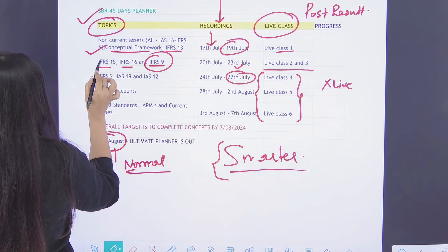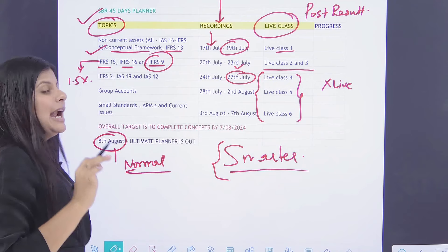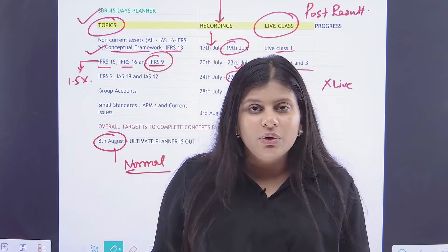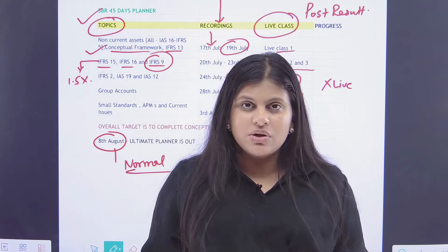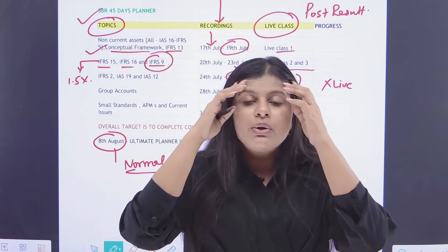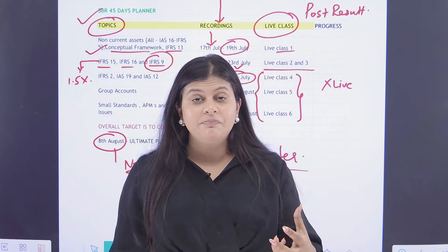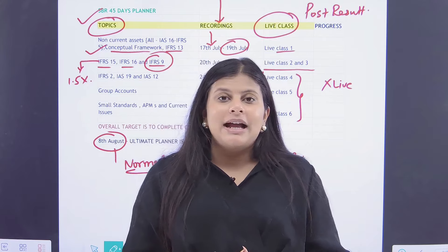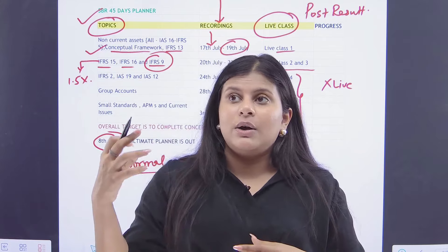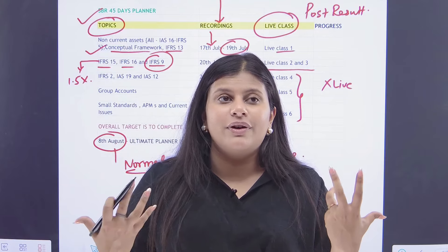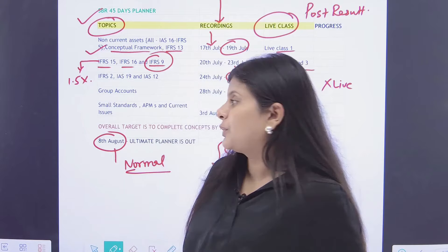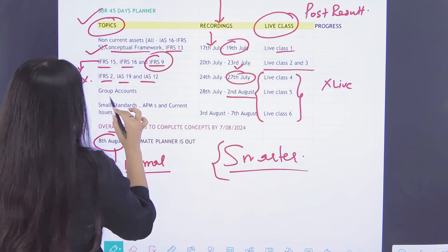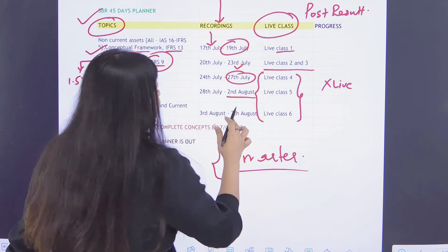And while watching the recordings, make sure you make your own notes or try to make a table. I'm not saying handwritten notes or something like that. I've already attached the notes on the portal with each lecture, but try to make some kind of table to memorize. I don't know if you've seen that video of Sumedha. She was a top scorer from our batch of June. She got 87 in SBR and I just interviewed her yesterday. And she told that how she used to make notes along with the lectures, which included small tables and some kind of crisp points which she can revise just a day before the exam. So of course, you have to use that. Then IFRS 2, IAS 19, IAS 12, you have to cover by 27th July. 2nd August, you have to cover the group accounts, then the small standards, current issues, etc. by 7th August.